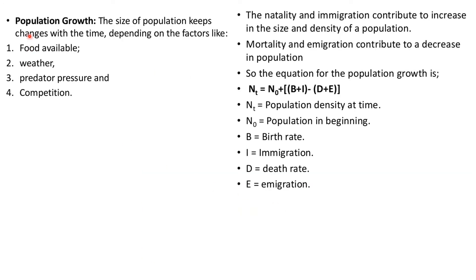The size of the population keeps changing with time depending on food availability, weather, predators and competition. Natality and immigration contribute to an increase in size and density of the population, while mortality and emigration contribute to a decrease. The equation is: Nt = N0 + (Birth rate + Immigration) − (Death rate + Emigration), which gives the population density at a given time.